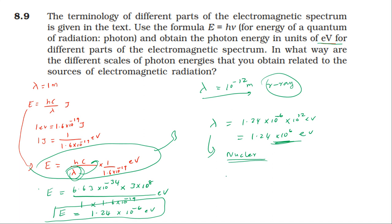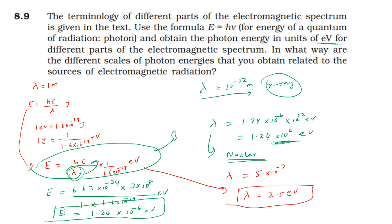For the visible region, wavelength is around 10⁻⁷ meter. Substituting into the formula gives energy approximately 2.5 electron volts. This corresponds to electron transitions between energy levels in atoms.